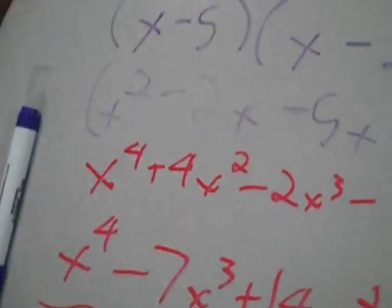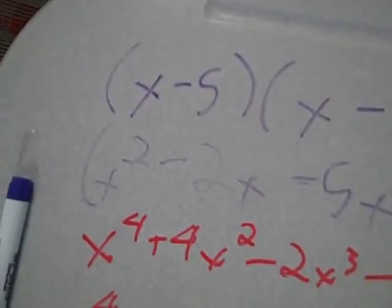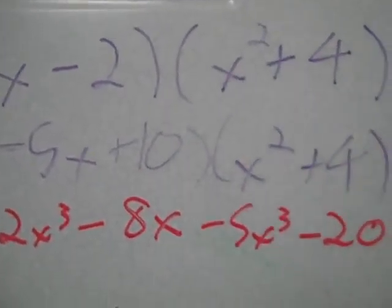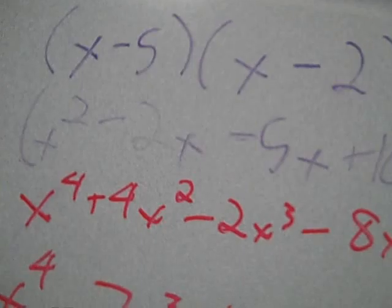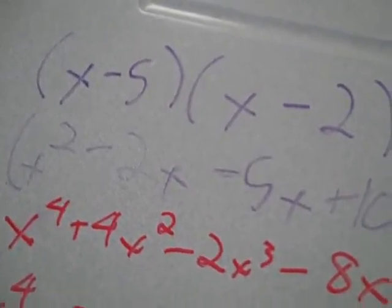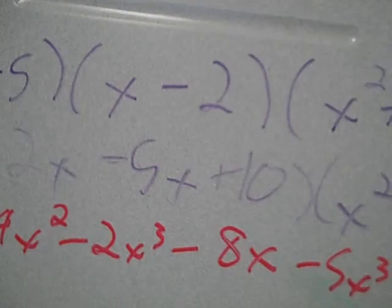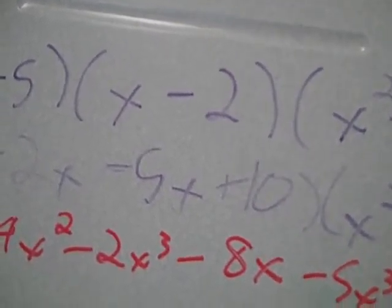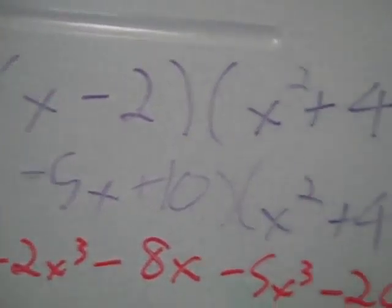To get the answers, you have to get the problem into factored form: x minus 5, x minus 2, and x squared plus 4. You set each equal to 0. x minus 5 equals 0, you add 5 to both sides, you get x minus 5. With x minus 2 equals 0, you add 2 to both sides and you get x equals 4.